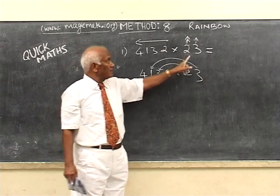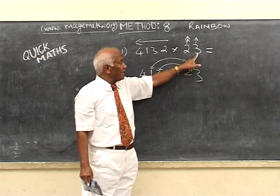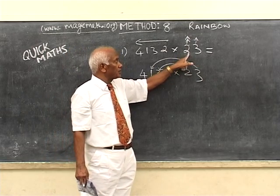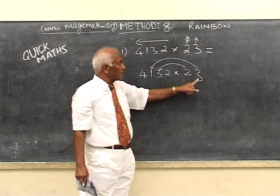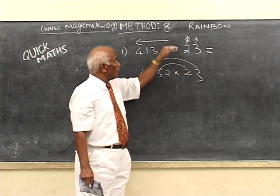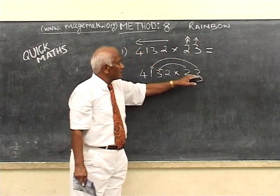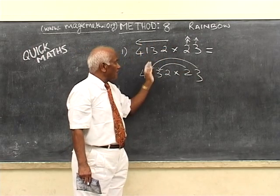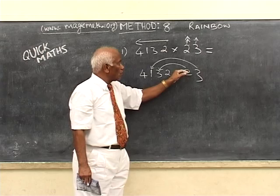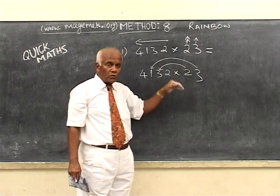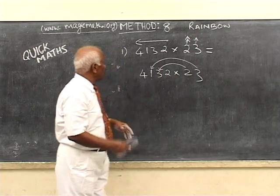What are the two points? First: start with 3, then by 2 — go from right to left. Second: when 3 multiplies a digit, 2 multiplies the digit behind it. These are the two points.